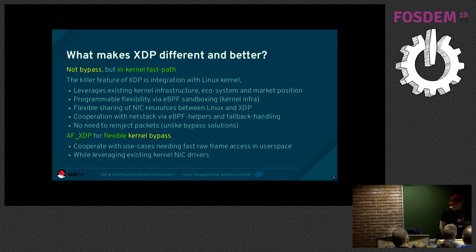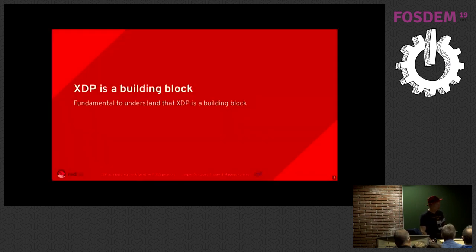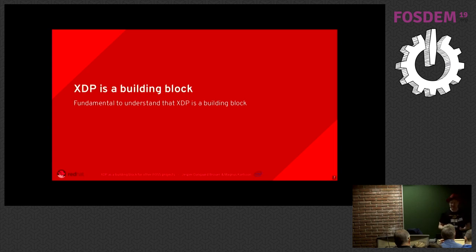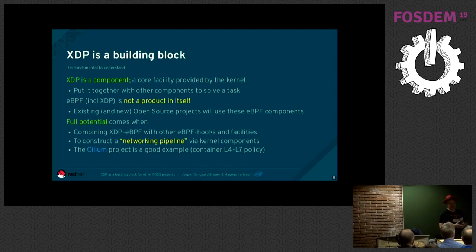That leads on to AF-XDP, which is a flexible kernel bypass. We can deliver raw frames to user space while leveraging the existing NIC drivers and ecosystem for driver maintainership. I want to stress that XDP is a building block you should use — it's a core facility provided by the kernel, but I need you to pick it up, use it, and put it together to solve a specific task. With fully programmable items, I'm not saying what you can or cannot do — this is an invitation to invent something I couldn't imagine.